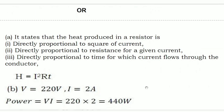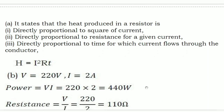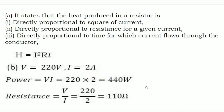Alternative question A: state Joule's Law of Heating. It states that the heat produced in a resistor is directly proportional to the square of the current, directly proportional to the resistance for a given current, and directly proportional to the time for which the current flows through the conductor. The formula is H = I²Rt. Writing this will earn you one mark.